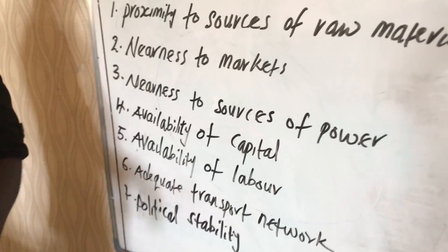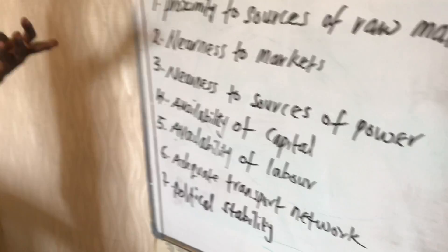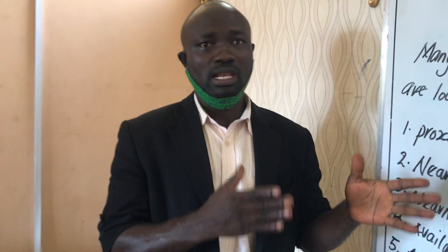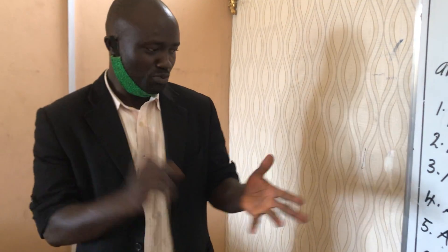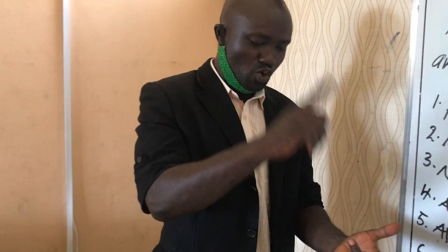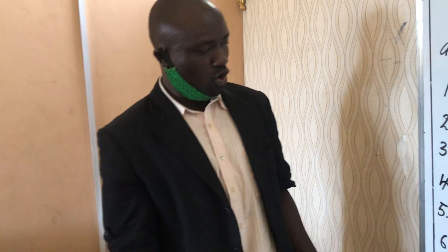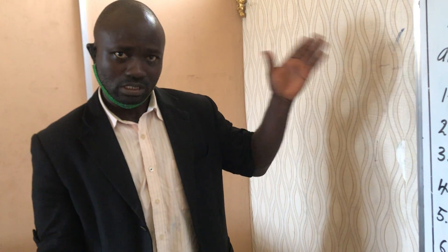The fifth factor is availability of labour — the same as availability of cheap labour or cheap service. Where they want to locate their industries, are there available workers in terms of skilled labour, semi-skilled labour, and so on? For any industry to operate and function effectively, they must put all these factors into consideration.